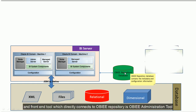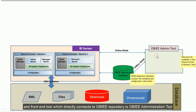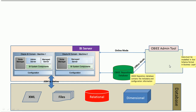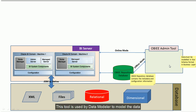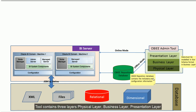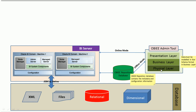The front-end tool which directly connects with the OBIEE repository is the OBIEE admin tool. This is the tool used by the OBIEE data modeler to model the data. The tool contains three layers: physical layer, business layer, and presentation layer.